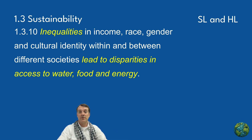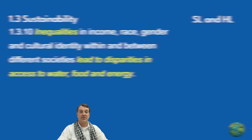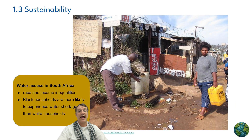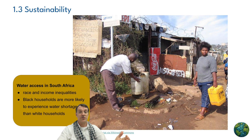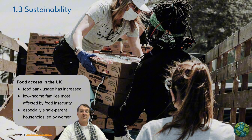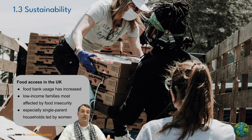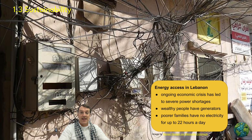Factors contributing to these inequalities include income, race, gender, and cultural identity — disparities that exist both within and between societies. In South Africa, there is inequitable access to fresh water, with Black households far more likely to experience shortages than white households — a disparity with historical roots in the apartheid regime. In the United Kingdom, increasing food bank usage is concentrated in low-income families, especially single-parent households led by women.